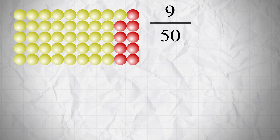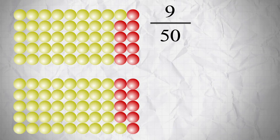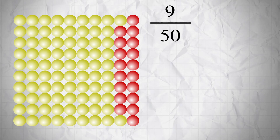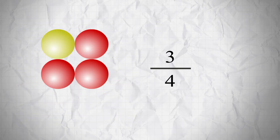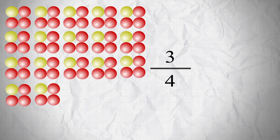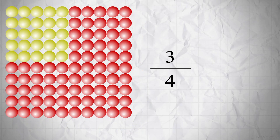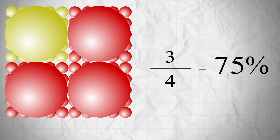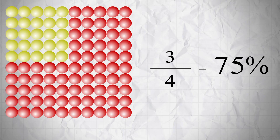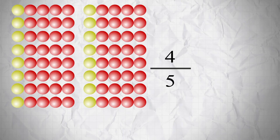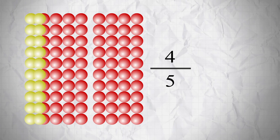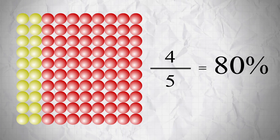Here's 9 out of 50. If we repeat this two times, we get 18 out of 100, or 18%. Here's 3 out of 4 — if we repeat this 25 times, 3 out of 4 becomes 75 out of 100, or 75%. So 3 out of 4 equals 75%. Here's 4 out of 5 — if we repeat this 20 times, 4 out of 5 becomes 80 out of 100, or 80%. So 4 out of 5 equals 80%.